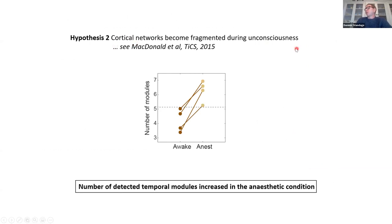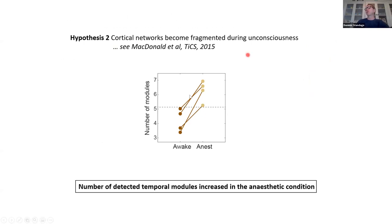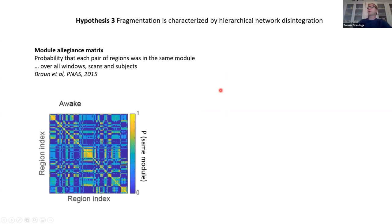The second hypothesis we tested is that cortical networks become fragmented during unconsciousness. There's a fairly large body of data that characterizes unconsciousness this way. Modularity is fragmentation — it's subsectioning of networks within larger networks. We can count the number of modules we identify averaged over the scans, and we see that we have more modules — greater fragmentation — under anesthetic.